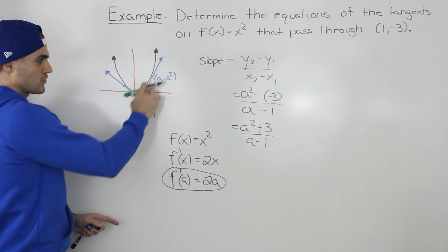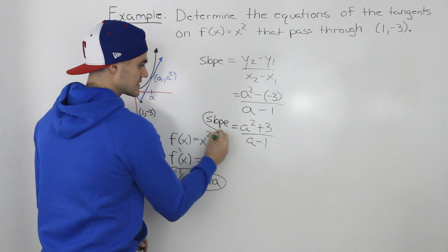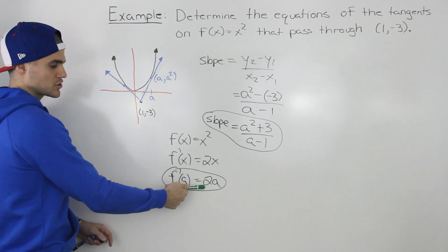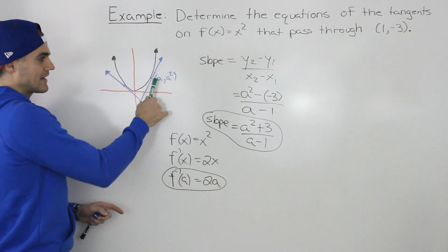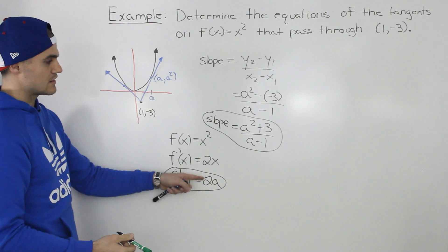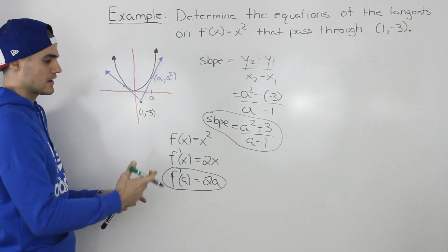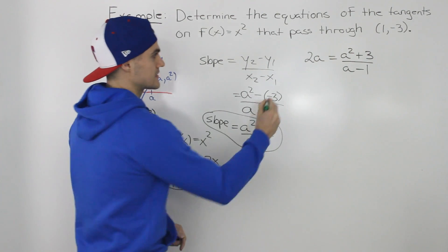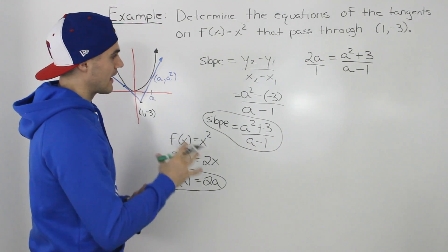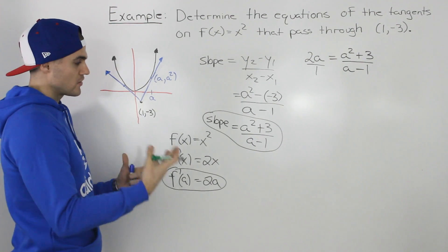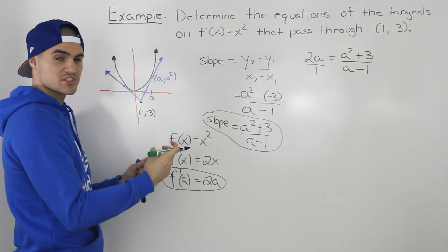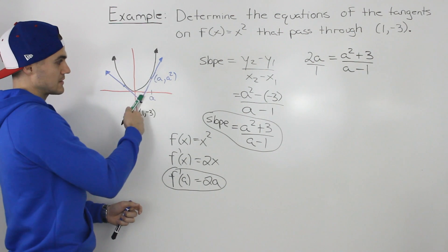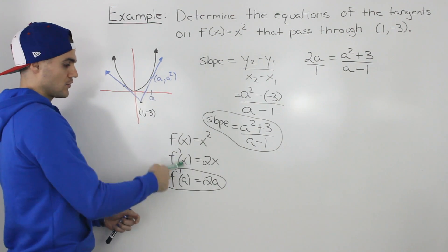Notice how we now have two expressions for the same slope. The first expression is (a² + 3) / (a - 1), which we got with the rise over run formula. And we also have 2a, which represents the value of the derivative at x = a. Because these expressions represent the slope of the same line, they must be equal. So we set them equal to each other and solve for a. The algebra is simple — we just cross multiply. But recognizing that these two expressions represent the same slope and making them equal — that is the tough part.